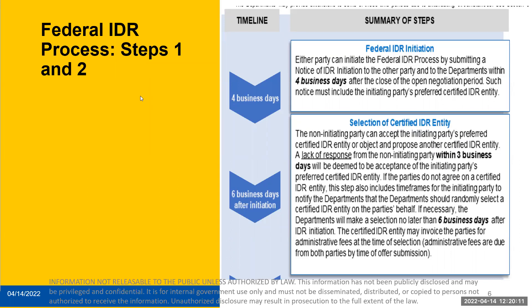The final question on this step is: will the IDR notice created by the initiating party be available through the portal, or is the only way for the non-initiating party to receive it for the initiating party to send it? The initiating party has to send a copy of the initiation web form directly to the non-initiating party. The notice will not be available in the portal for the other party to access — a copy of the initiation web form must be sent directly to the non-initiating party.